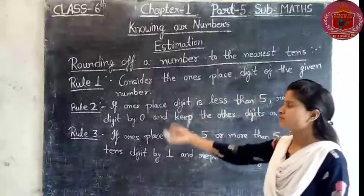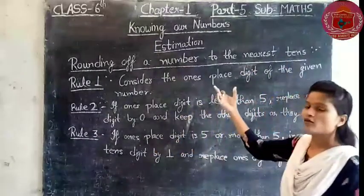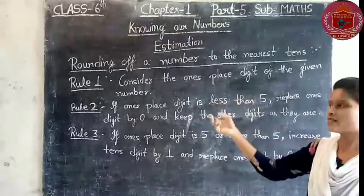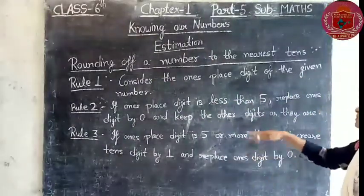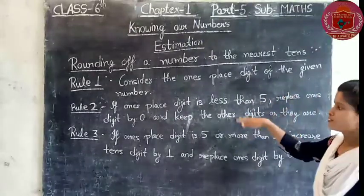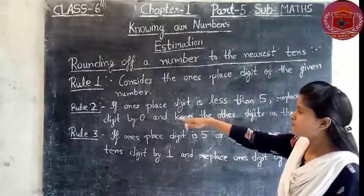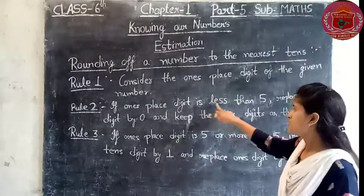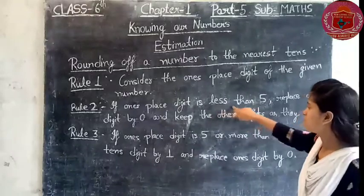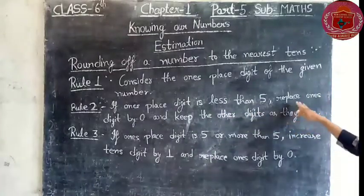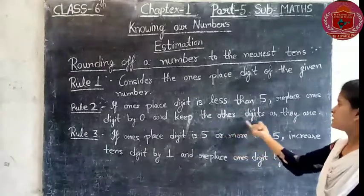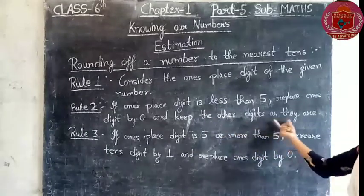So here are 3 rules for rounding of a given number to the nearest 10. Rule number 1 says: consider the ones digit of the given number. Rule number 2 is: if the ones digit is less than 5, then replace the ones digit by 0 and keep the other digits as they are.